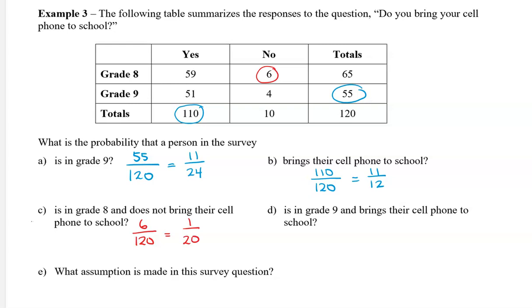Next, what is the probability that a person in the survey is in grade 9 and they bring their cell phone to school? In grade 9, bringing their cell phone to school, there are 51 of them. So it's going to be 51 divided by 120. Since 51 is divisible by 3, we know that because 5 plus 1 is 6, and 6 is divisible by 3. 51 divided by 3 is 17, and 120 divided by 3 is 40.